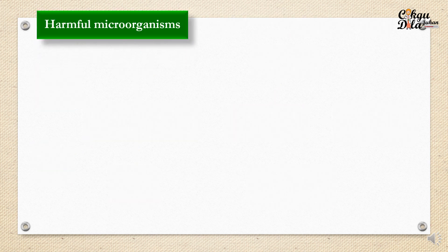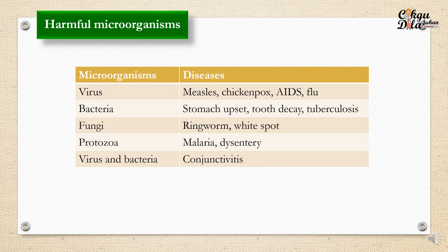These are some examples of harmful microorganisms. Viruses can cause measles, chickenpox, AIDS, and flu. Bacteria can cause stomach ache, stomach upset, tooth decay, and tuberculosis. Some fungi can cause ringworm and white spots. Protozoa can cause malaria and dysentery. Whereas virus and bacteria can cause conjunctivitis.